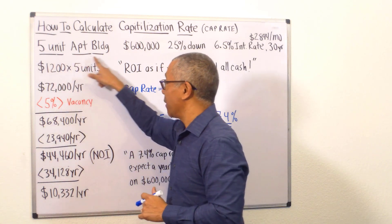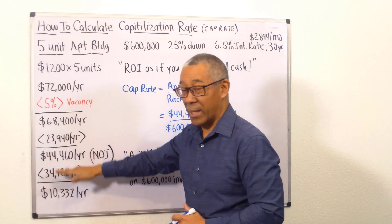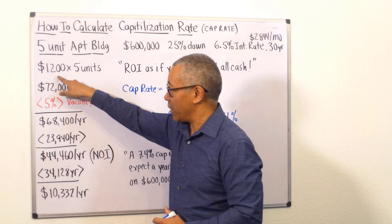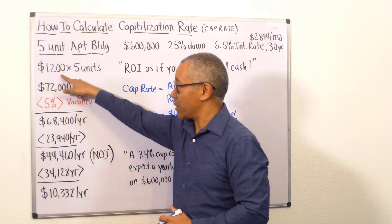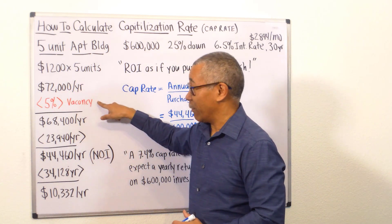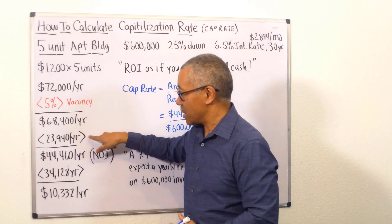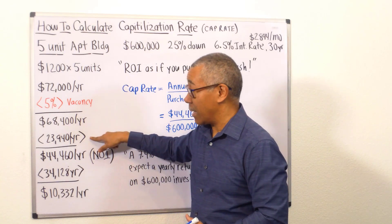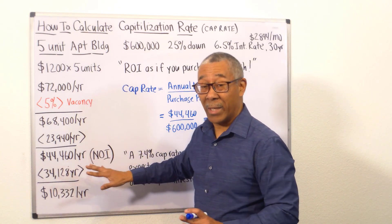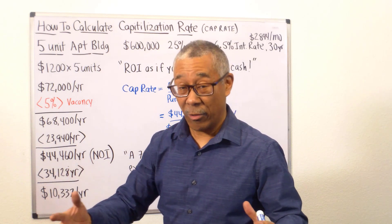This five-unit building we purchased for $600,000 — so we have the purchase price. To figure out the NOI, I'm going to go through this quick example. You have five units each at $1,200, which gives you $72,000 a year. You have your 5% vacancy, giving you your effective gross income — basically $72,000 minus 5%. Then subtract your expenses from your income. Income minus expenses equals your NOI — your net operating income.